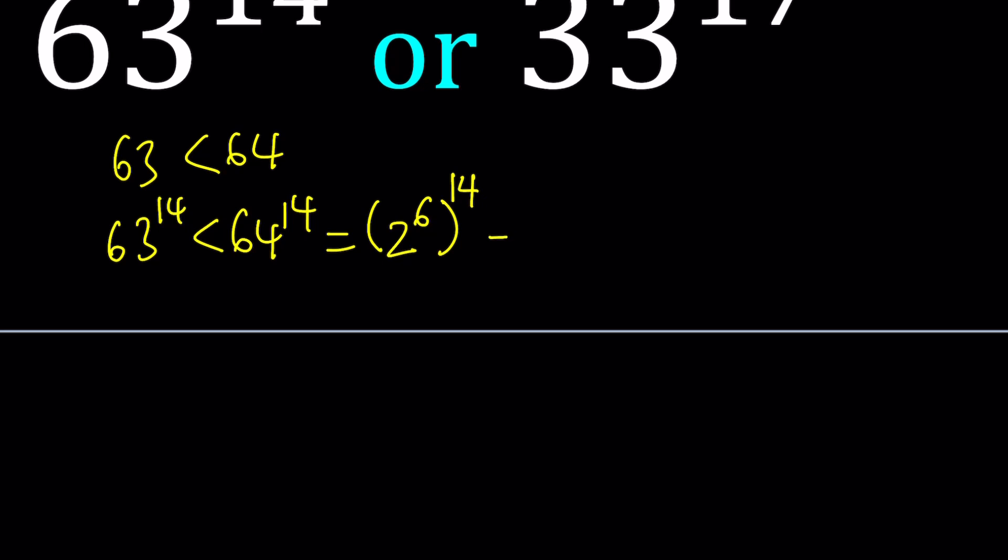And here we're supposed to multiply, obviously. So 6 times 14 is 64. I mean 84, that's what I meant. 2 to the power of 84. Again, this is a very large number. So as a conclusion, my number, one of the numbers, is less than this number. But how does that relate to the other number? So here's what you need to think about.